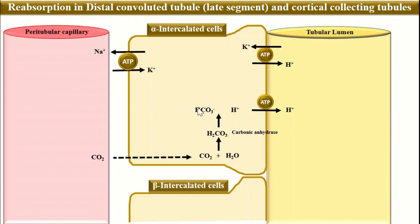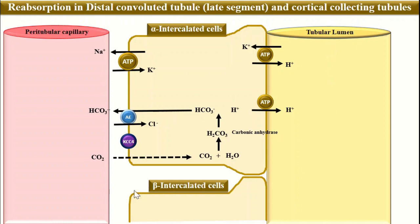What happens to the bicarbonate ion? For this, we have another important transporter located on the basal side of the intercalated cell, which is called the anion exchanger. This bicarbonate is reabsorbed into the peritubular capillaries in exchange for a chloride ion. It is important to remember that this is new bicarbonate being formed — not bicarbonate from the tubular lumen. With each secretion of a hydrogen ion into the tubular lumen, one new bicarbonate is reabsorbed into the peritubular capillaries.